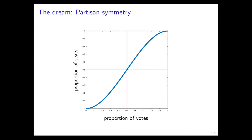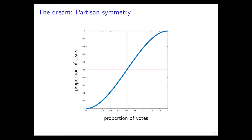When we do this, what you would like is for future elections — when you look at how many votes are cast that happen to be blue or red — that that somehow reflects the proportion of seats that end up being blue or red. I'm showing you a curve here. It's the dream. It's called partisan symmetry. If 50% of the votes are red, then about 50% of the seats end up being red. And if you increase or decrease the votes, the number of seats will follow accordingly, following some symmetric curve.